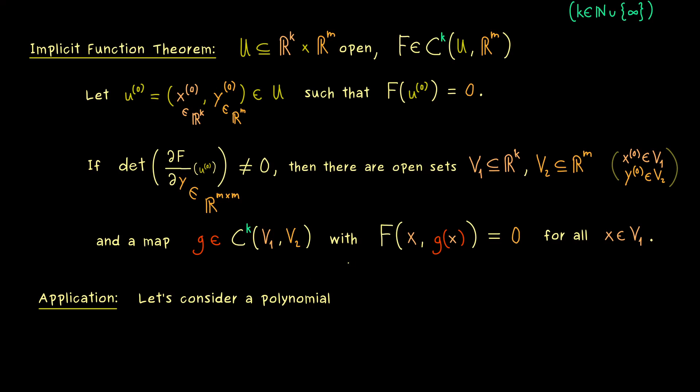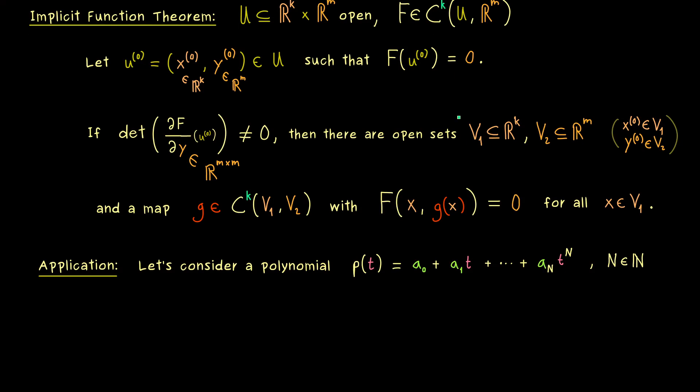In particular we will just take a polynomial with a real variable t. This means we have a finite number of coefficients and we can call them a₀, a₁ and so on. And let's say the last one we have here is aₙ with capital N. So the degree of the polynomial is given by capital N. And of course a polynomial is always a C∞ function.